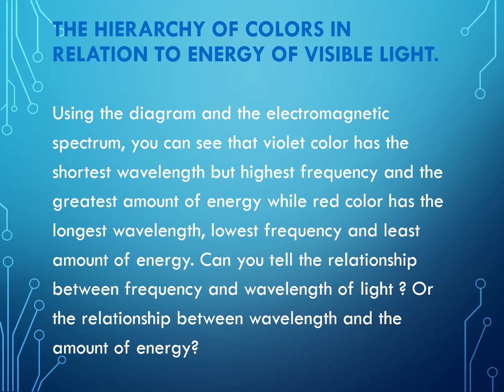Using the diagram and the electromagnetic spectrum, you can see that violet color has the shortest wavelength, but highest frequency and the greatest amount of energy. Take note: the violet color has the greatest amount of energy. In contrast, at the topmost of the rainbow — ROY-G-VIV — you have the red color, which has the longest wavelength, lowest frequency, and the least amount of energy.